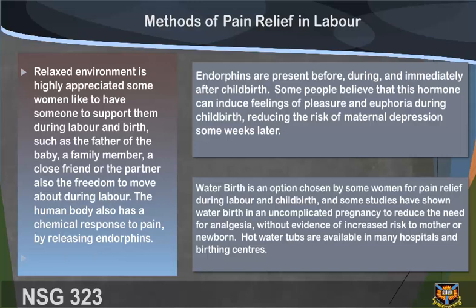The human body also has a chemical response to pain by releasing endorphins, which are present before, during, and immediately after childbirth. Some people believe this hormone can induce feelings of pleasure and euphoria during childbirth, reducing the risk of maternal depression some weeks later. Water birth is an option chosen by some women for pain relief during labor and childbirth. Some studies have shown water birth in an uncomplicated pregnancy reduces the need for analgesia without evidence of increased risk to mother or newborn.